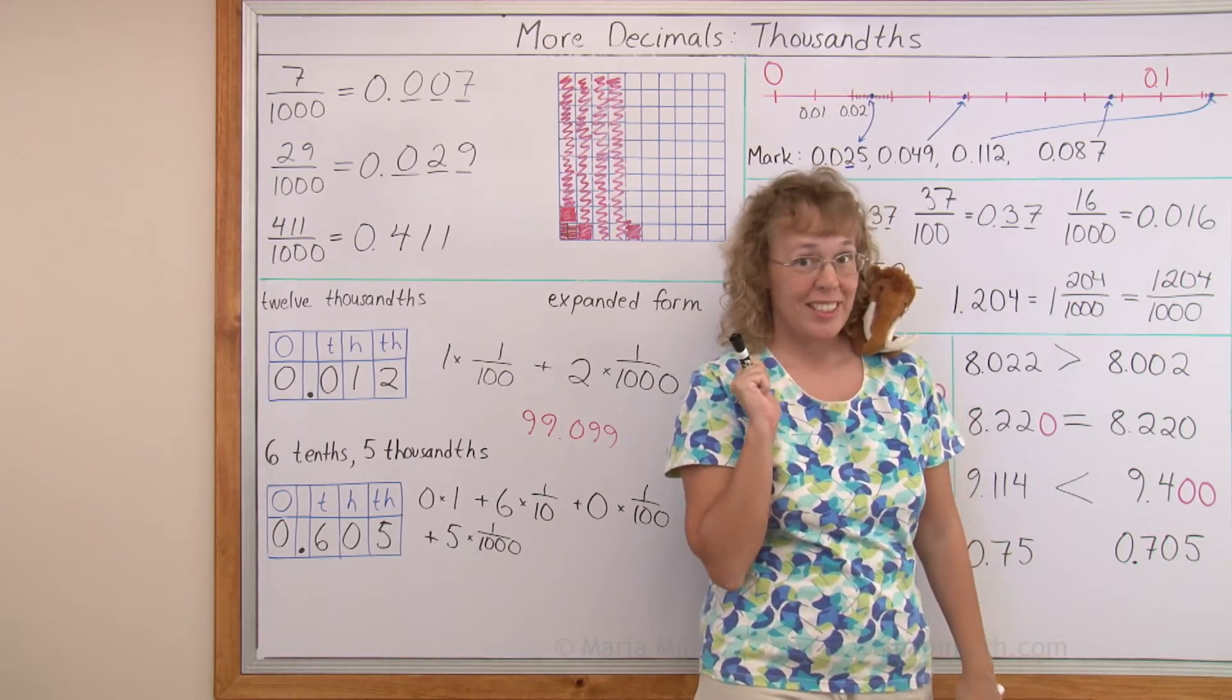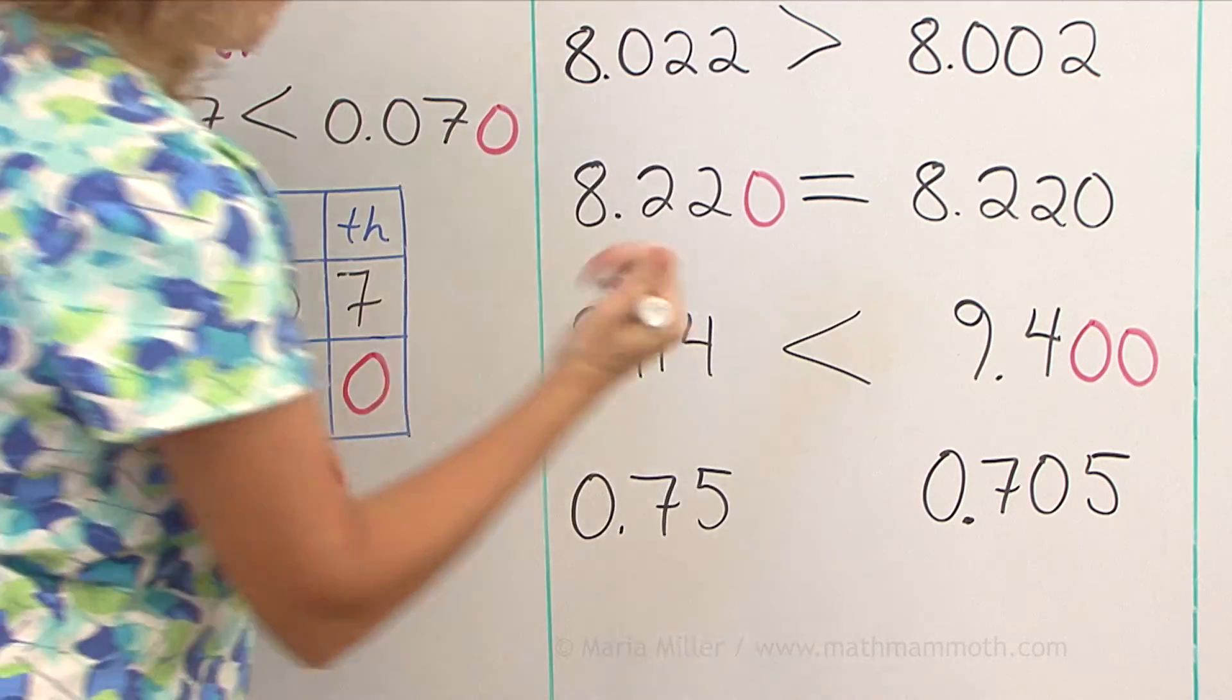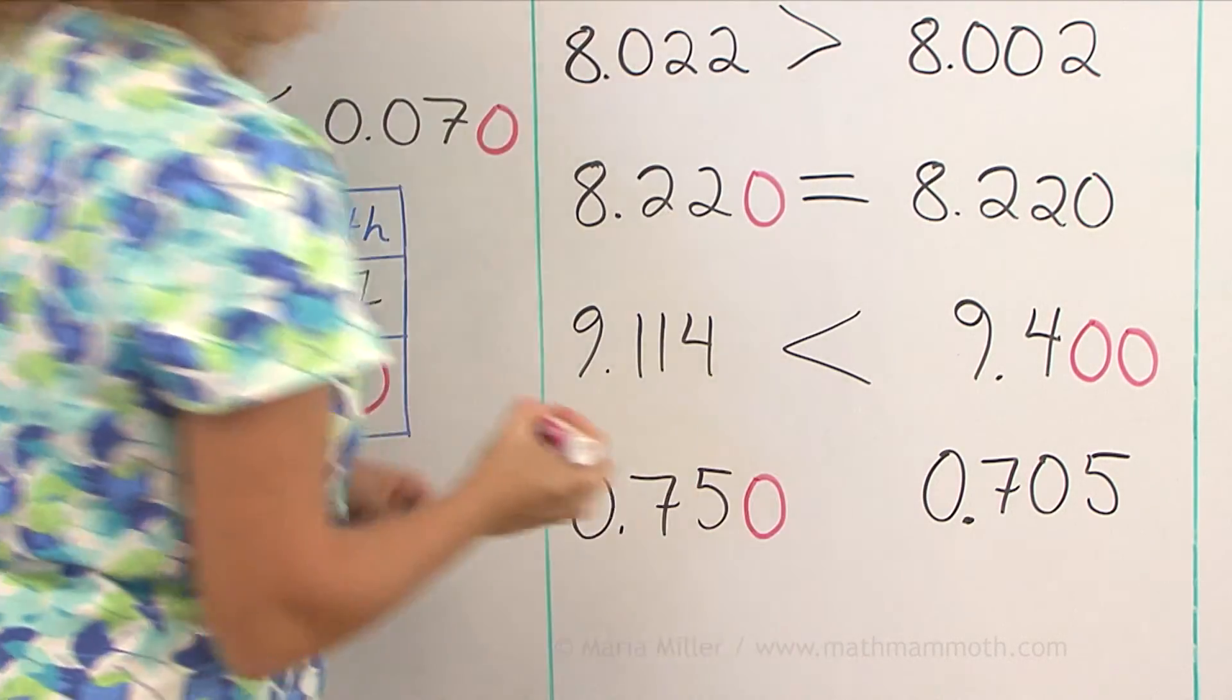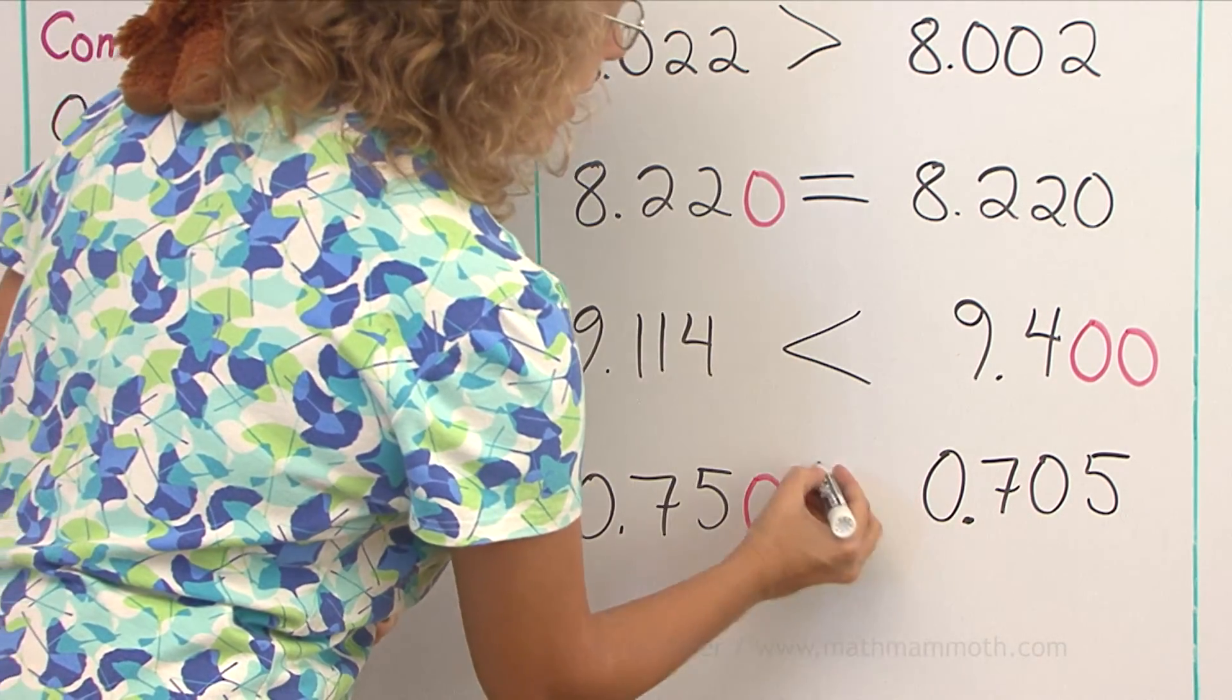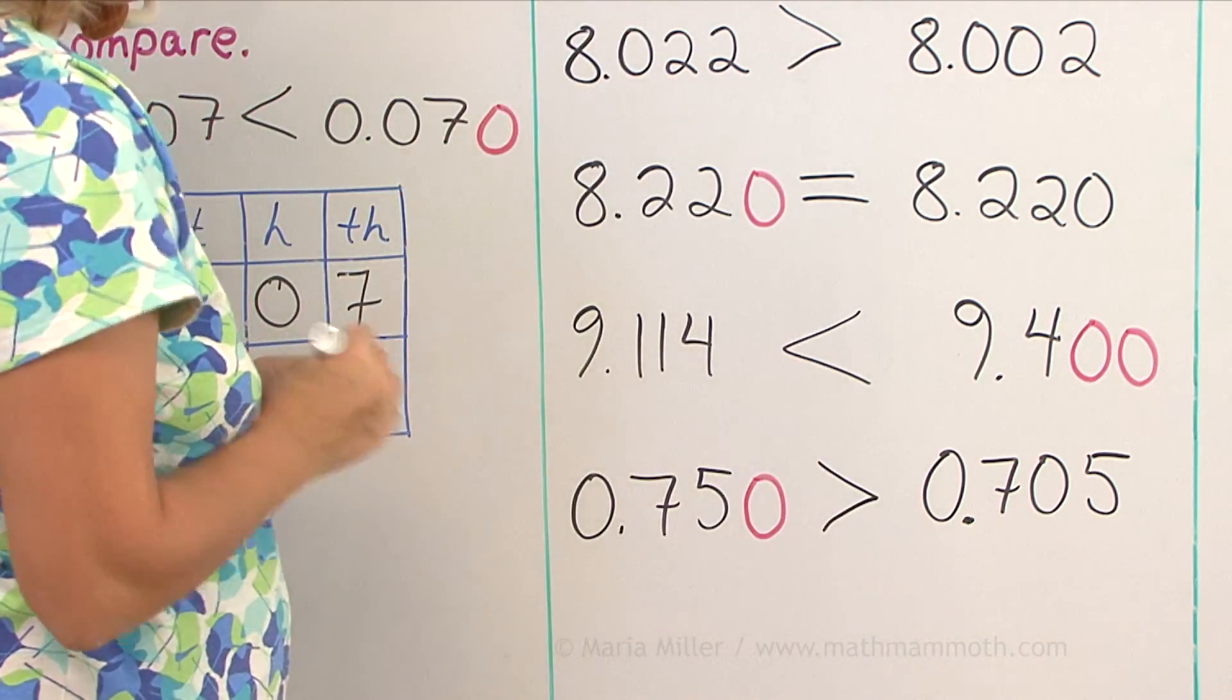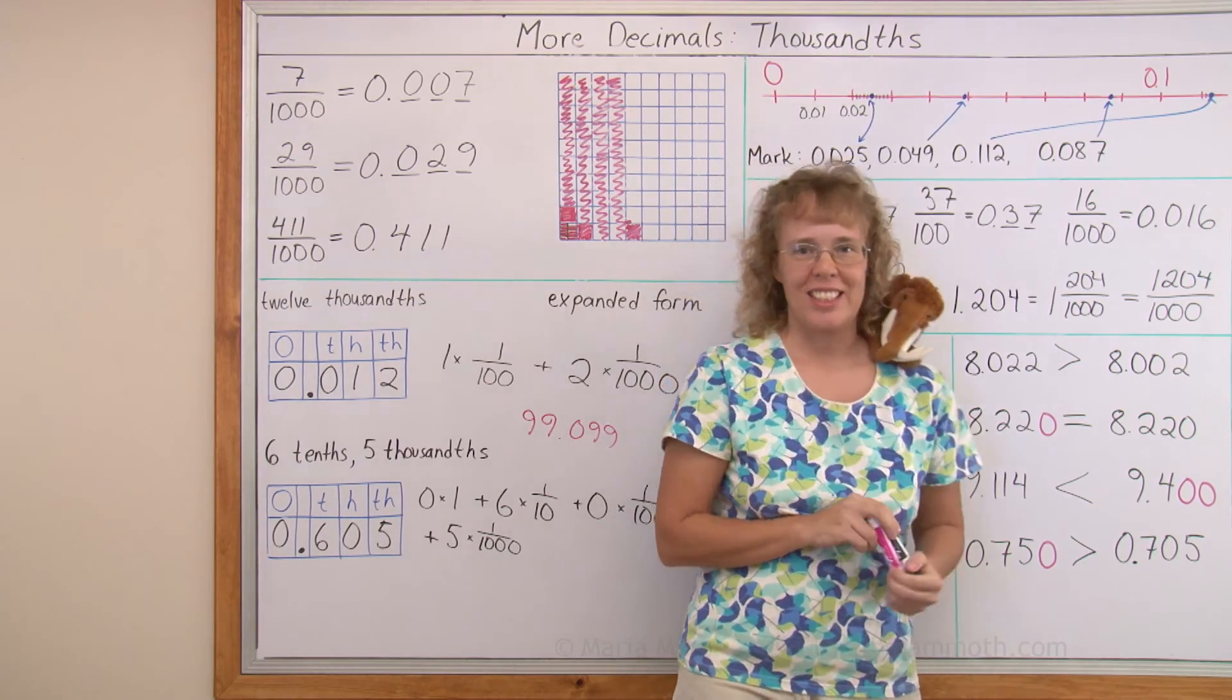The last one you can do yourself, right? Pretty easy. Tag a zero there. And now we can see that seven hundred fifty thousandths is the greater number. Okay, we're all done with this lesson.